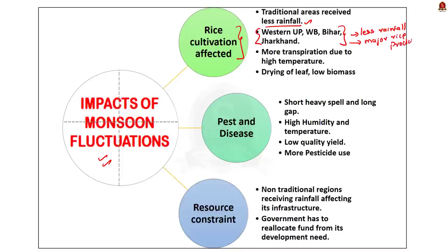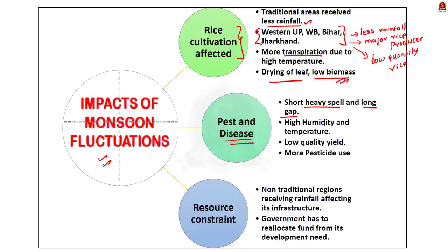Since these regions received less rainfall, the quantity and quality of rice production is affected. Due to less rain and high temperature, plant transpiration increases, resulting in drying of leaves, reduction in leaf expansion rates and plant biomass. Transpiration is the process by which plants release water vapor through their stomatal openings. The second major impact is the rise in pest attacks and diseases, as climate change brings short spells of heavy rainfall followed by long periods without rain.